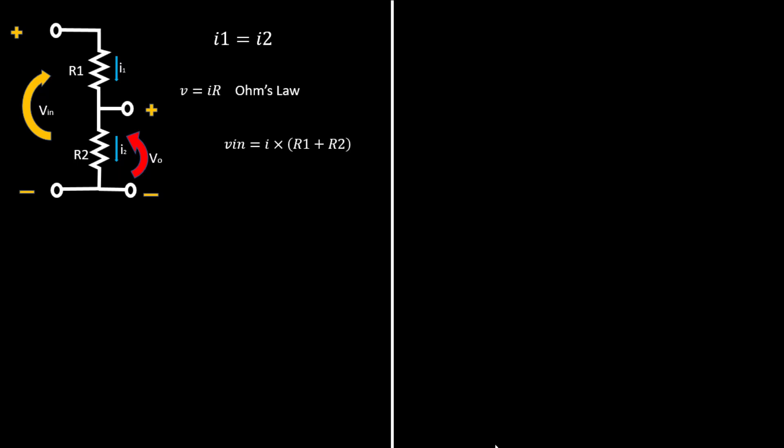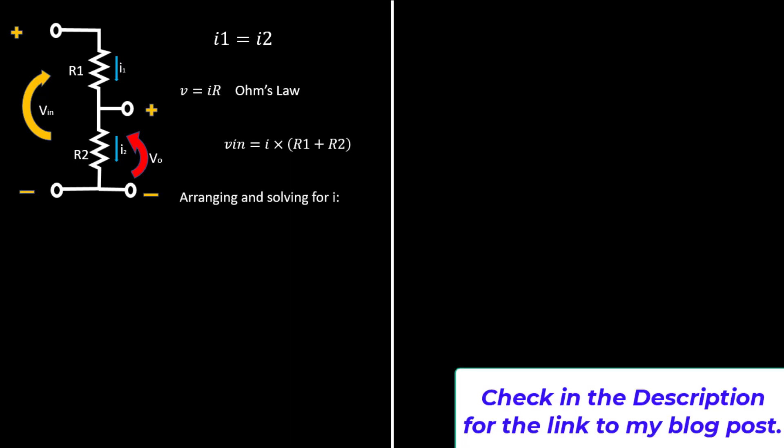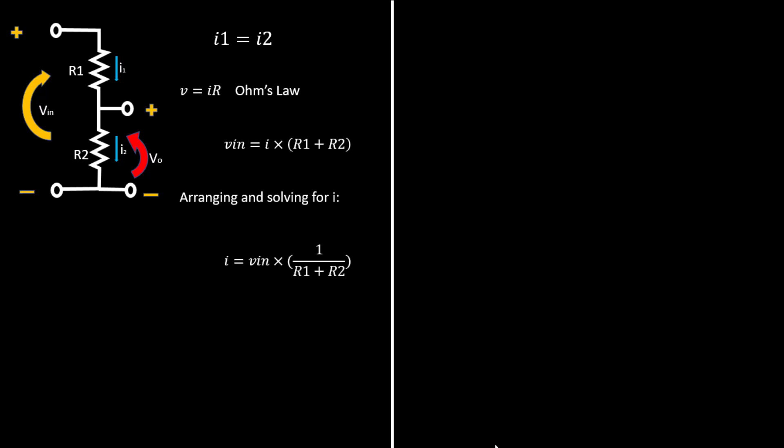Arranging to solve for I, the current entering equals Vin divided by R1 plus R2, because we know I equals V divided by R — the voltage divided by the total R connected in series, that is the addition of the two R's.